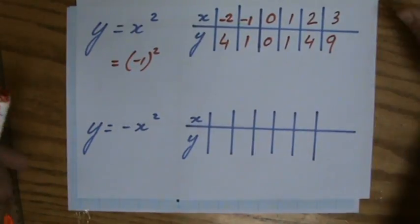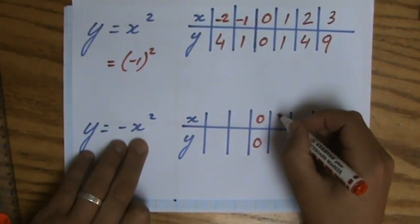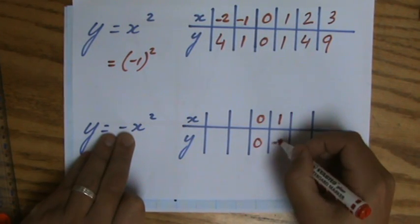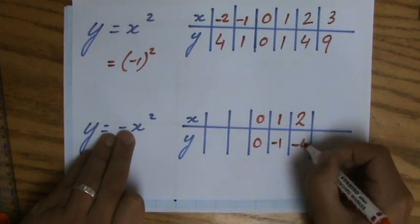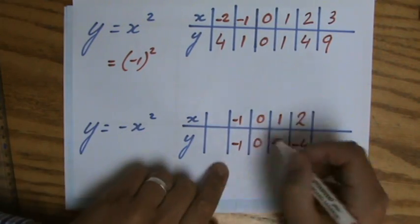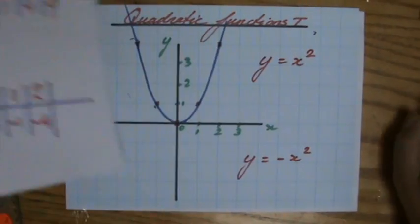Minus x squared, very quickly. When x is zero, y is zero. When x is one, one squared is one, but then I'm with a minus in front of it, so minus one. When x is two, two squared is four, minus four. When x is minus one, minus one squared is one, so minus one. When x is minus two, minus four.